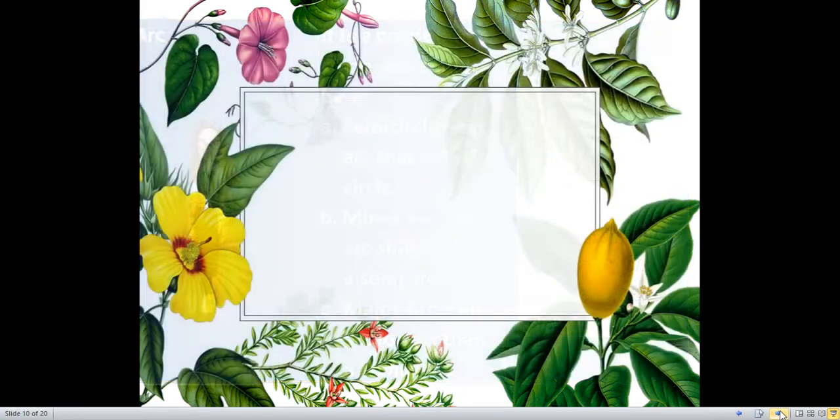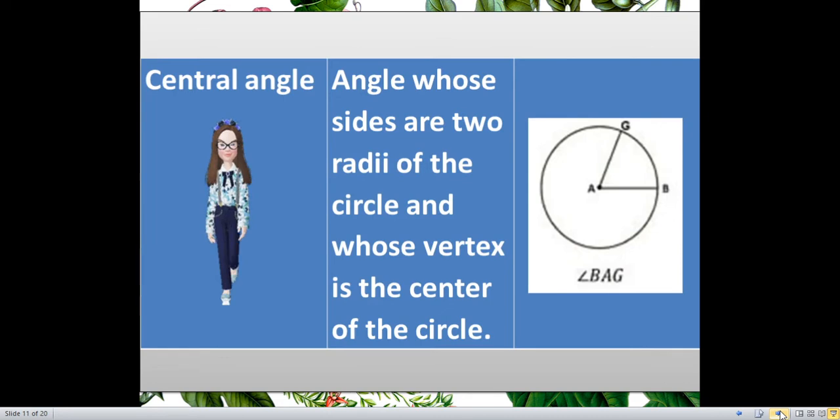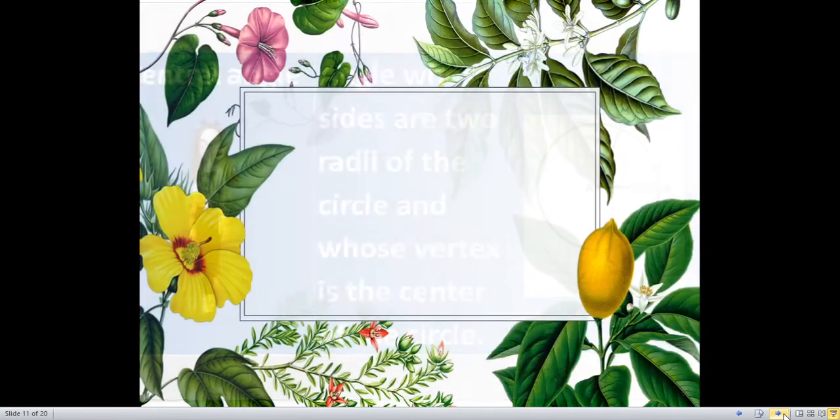Next. We have also the central angle. Central angle is an angle whose sides are two radii of the circle and whose vertex is the center of the circle. Take note, the vertex should be the center of the circle and the angles or the sides should be radii of our circle. So, we have now angle BAG. Again, your central angle should have a vertex in the center and radii of our circle.